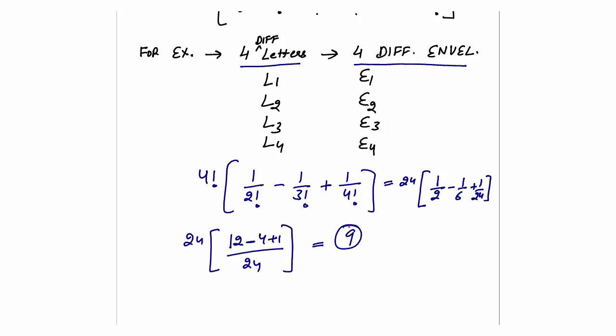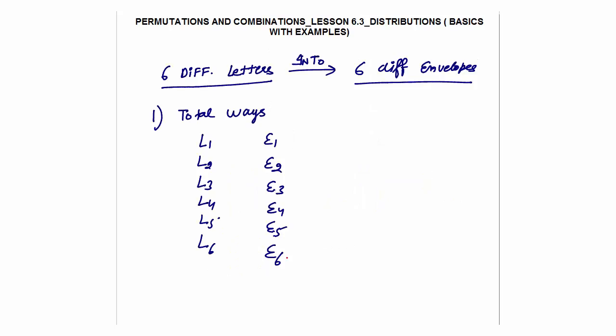So in 9 ways we can put 4 different letters into 4 different envelopes such that all letters go to the wrong envelope. Next: I have 6 different letters and I want to post them into 6 different envelopes. What are the total ways to do this?